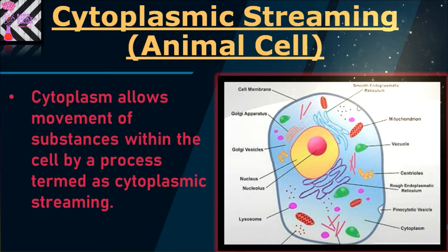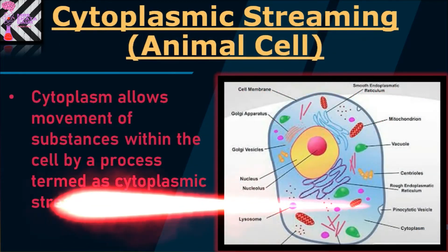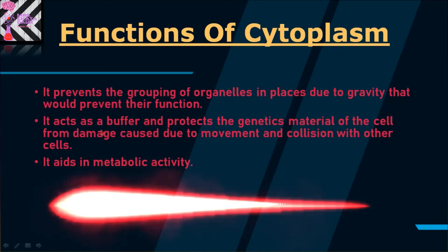Cytoplasm is not stationary — it is also floating. So what are the functions of cytoplasm? First, it prevents the grouping of organelles in one place due to gravity, which would otherwise prevent their function. These organelles are not attached to each other. Just as you can see in this animal cell, they all are showing social distancing — that is controlled by the cytoplasm.